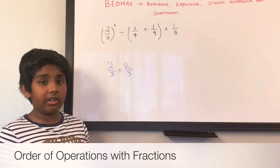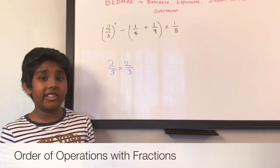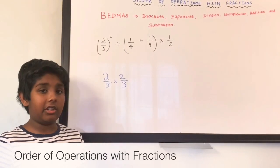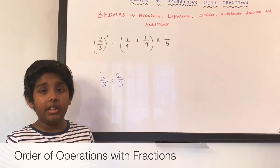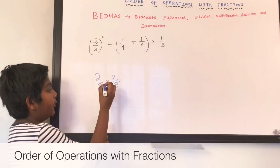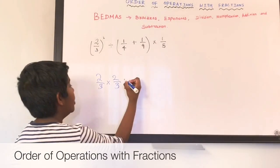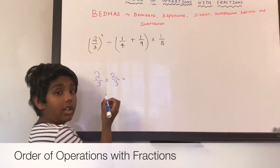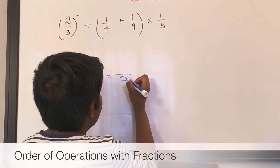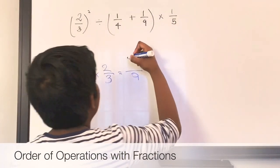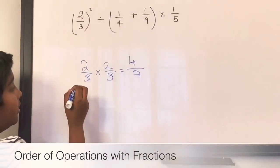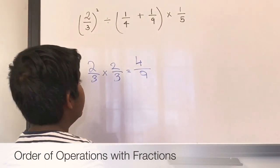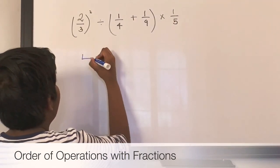I taught you how to do adding fractions, subtracting fractions, multiplying fractions, and dividing fractions. This is multiplication with fractions — it's going to be easy. Let's see if we can reduce anything. No, we can't. So we just multiply the top numbers and the bottom numbers: 2 times 2 equals 4, and 3 times 3 equals 9. So the answer is 4 over 9.